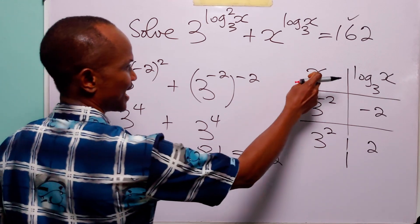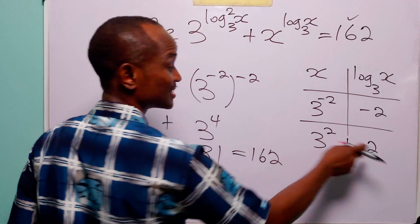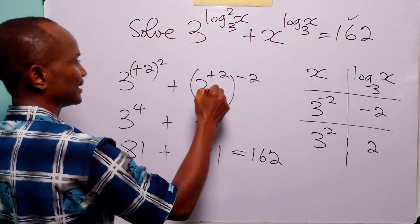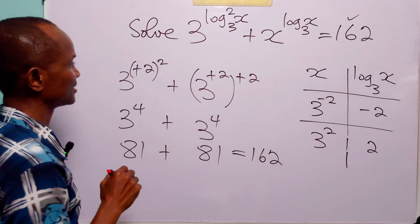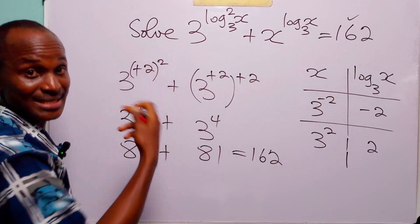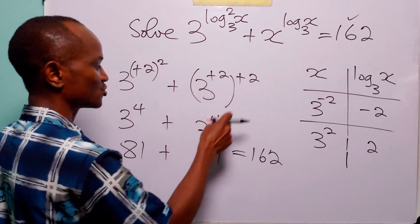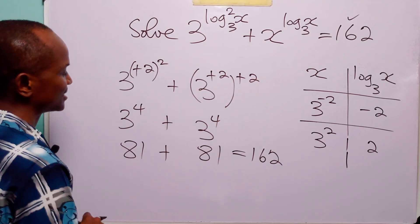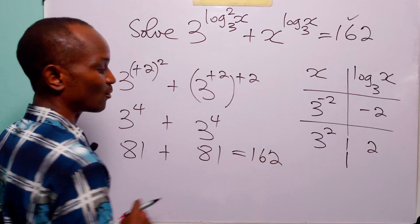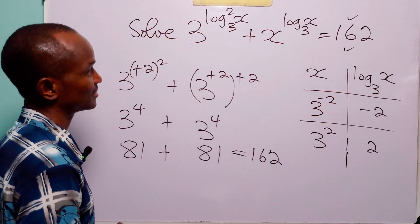In the second case, x equals 3 to the power 2 and log to base 3 of x equals 2. Replacing all the negatives with positives: 3 to the power 2 squared gives 3 to the power 4, which is 81. And 2 times 2 is also 4, so the second term is likewise 81. We still have 81 plus 81 equal to 162 — this checks out as well.